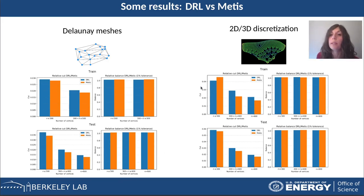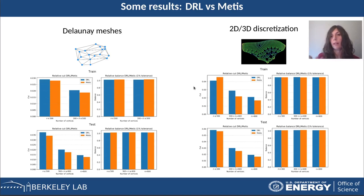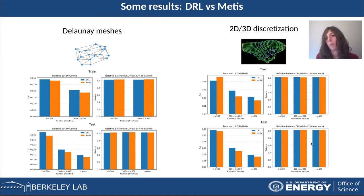For 2D-3D discretizations, the training was very hard because in this class there is a huge variety of graphs and discretizations. But also in this case, we see that the balance of the deep reinforcement learning agent and METIS are the same.